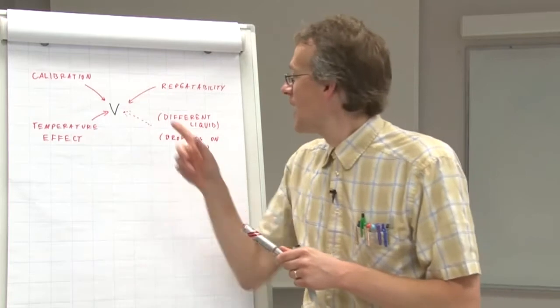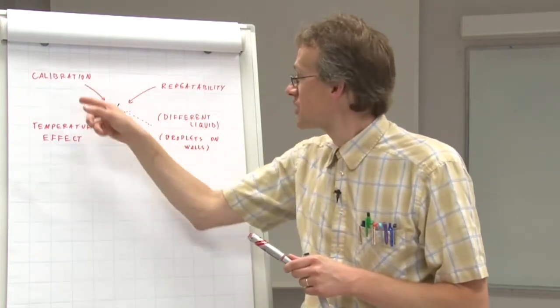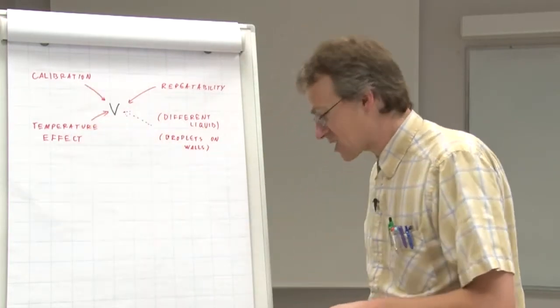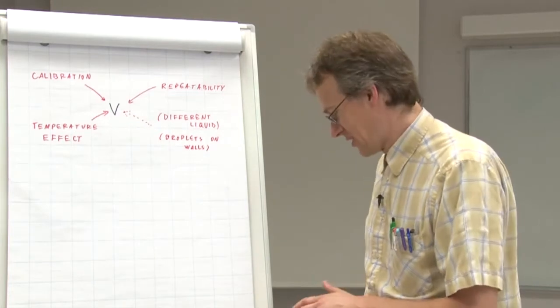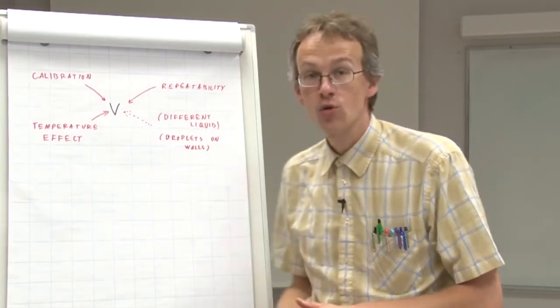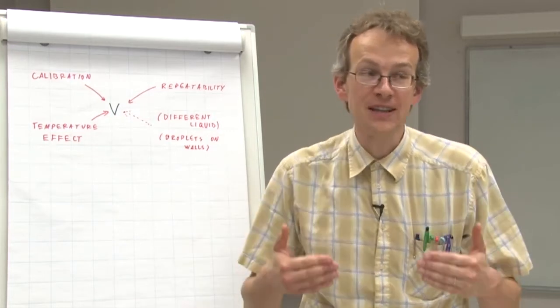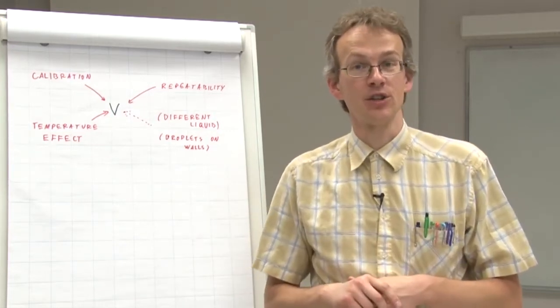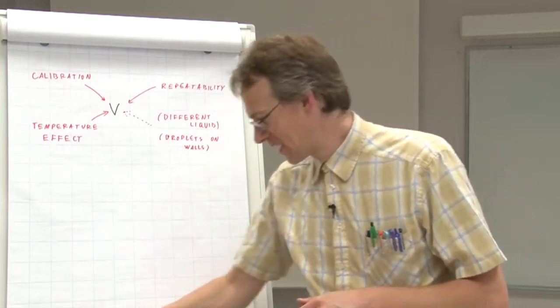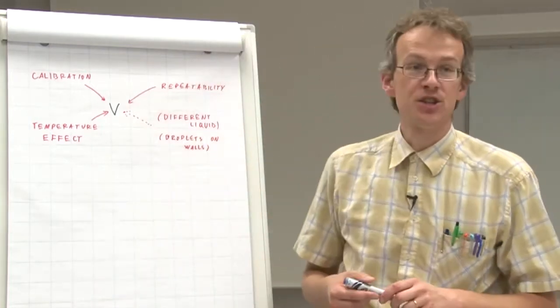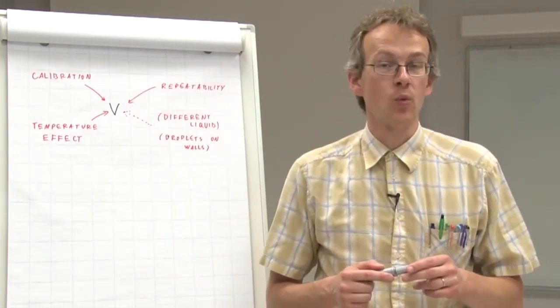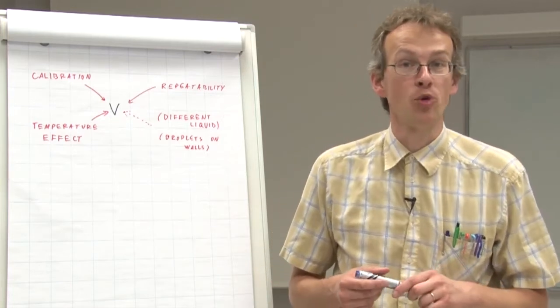So now we have our uncertainty sources and as usually the uncertainty evaluation goes, those uncertainty sources are quantitatively expressed by uncertainty components. So to each and every of them we have an uncertainty component.